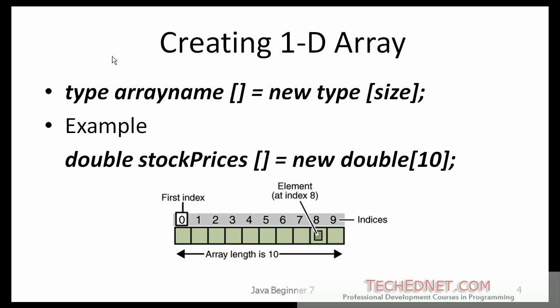Here is a quick syntax for creating a one dimensional array. The type is the base type — the type of data that the array will hold, for example double in this case. The size of the array is the number of elements the array will hold. The new keyword builds an array and allocates the required memory, in this example for 10 elements.